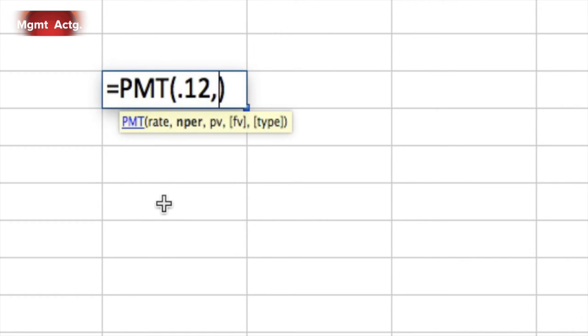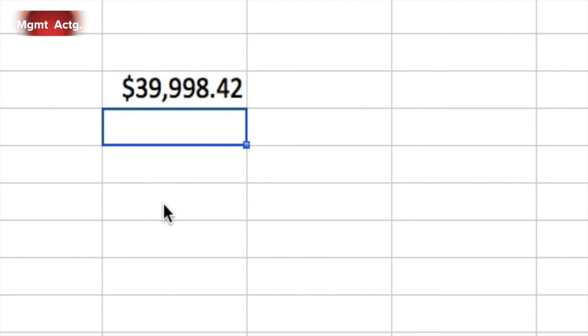The number of periods per year is 10, so we can fill that in. Our present value is negative 226. We can fill that in. And we know the future value is zero, so we can fill it in. As far as the type, whether it's an annuity due or an ordinary annuity, we'll just let it default to the ordinary annuity, which is what it is. Payments are at the end of the year, not at the beginning of the year. We just hit enter, we get 39,99842, which is close to the 40,000. We can round that up to 40,000. So, now you know how to use the PMT function in Excel.